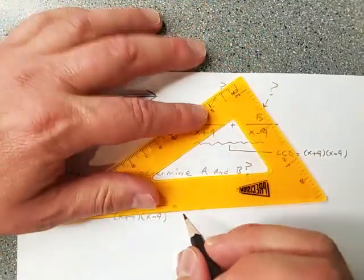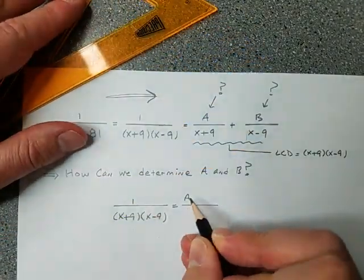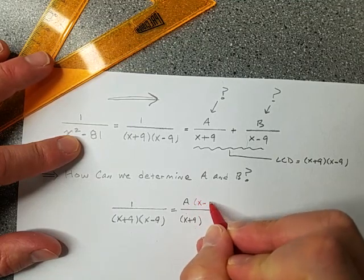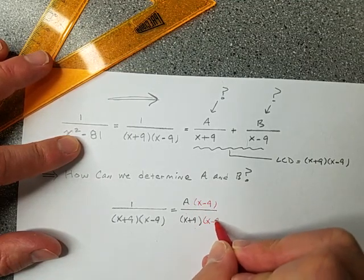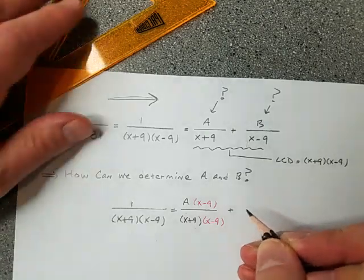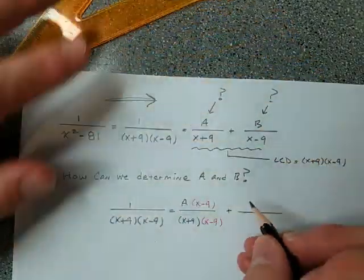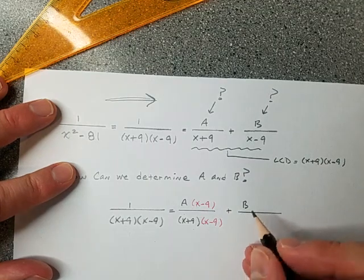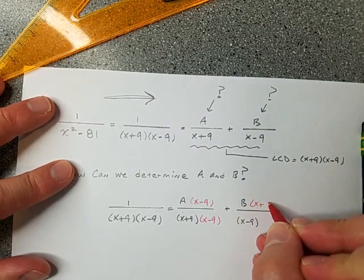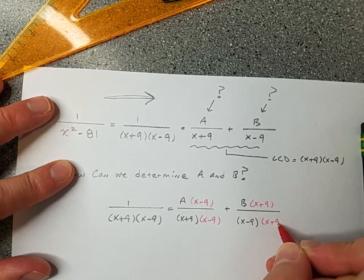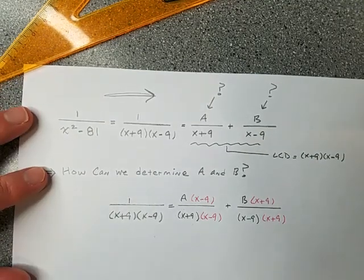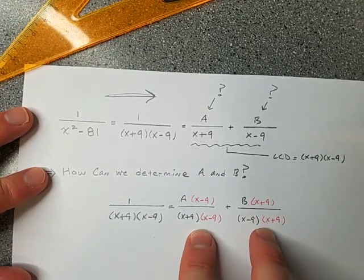The first fraction, A over x plus 9, gets multiplied by x minus 9 on top and bottom to get the common denominator. The second fraction, B over x minus 9, gets multiplied by x plus 9 on top and bottom. The order of multiplication doesn't matter, so that gives us a common denominator.